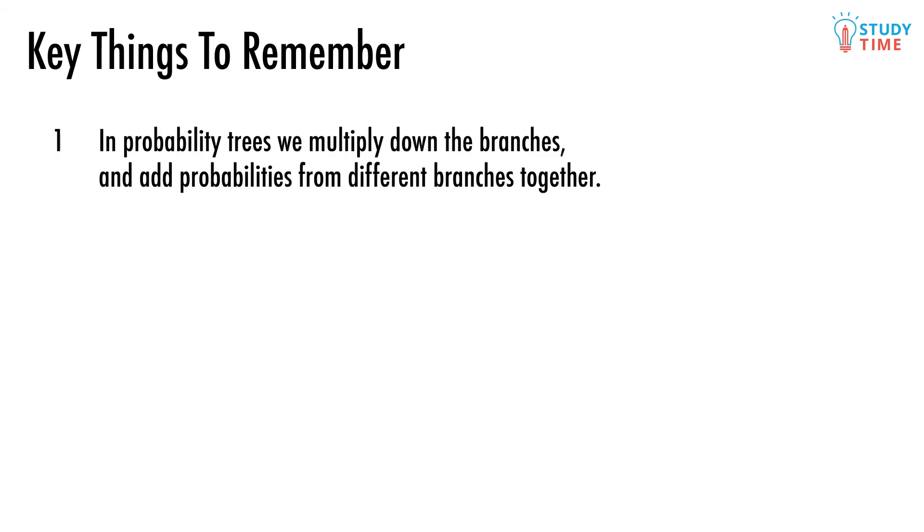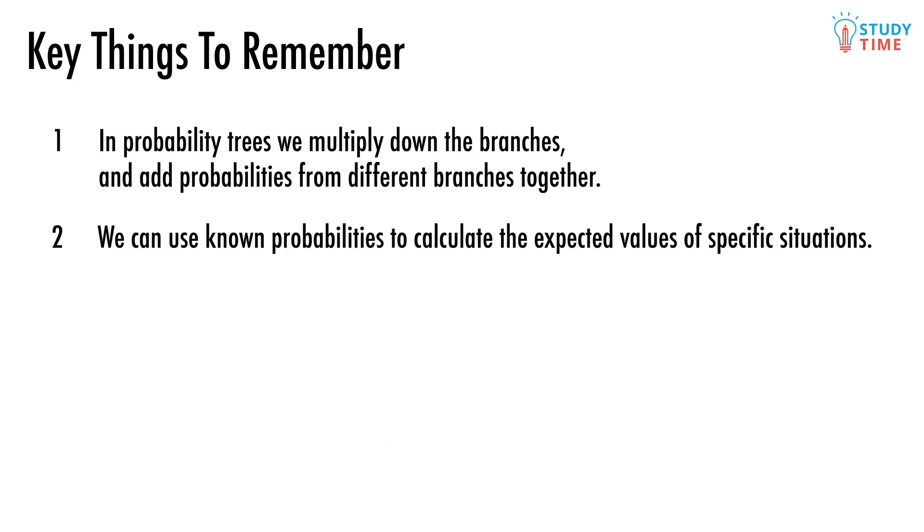Remember, in probability trees we multiply down the branches and add probabilities from different branches together. We can use known probabilities to calculate the expected values of specific situations. We can compare absolute risks to find the relative risk of something.